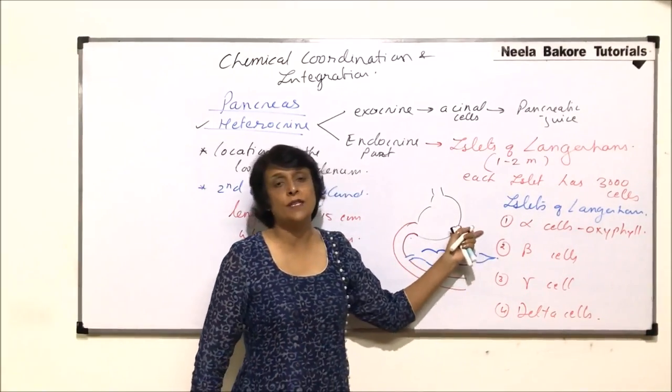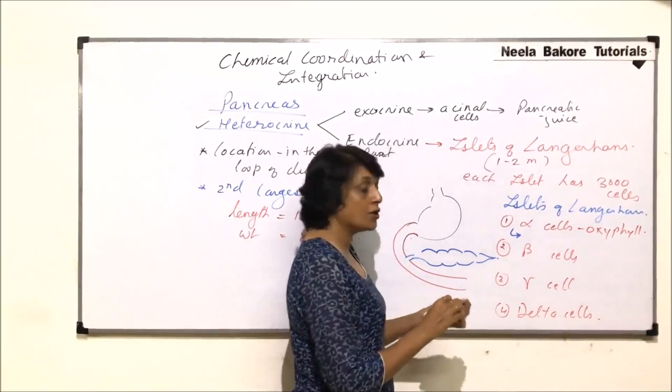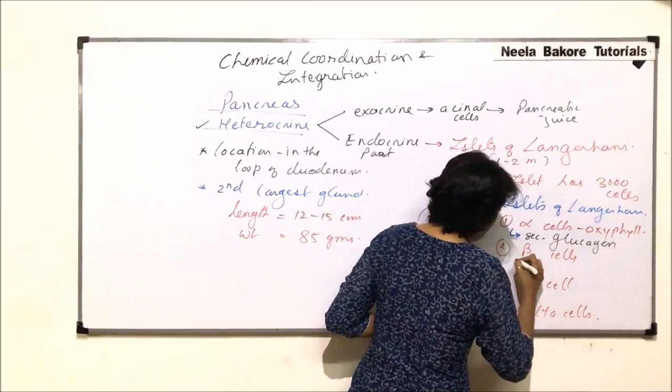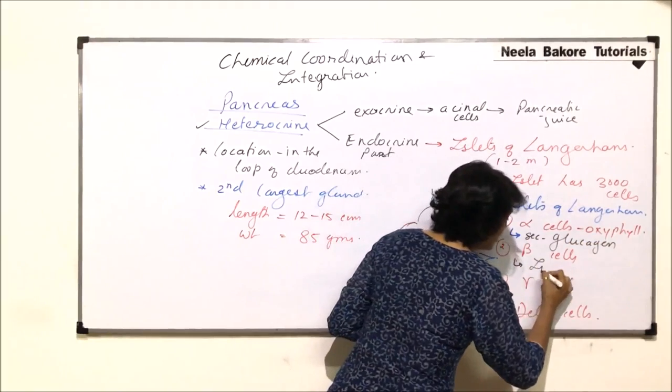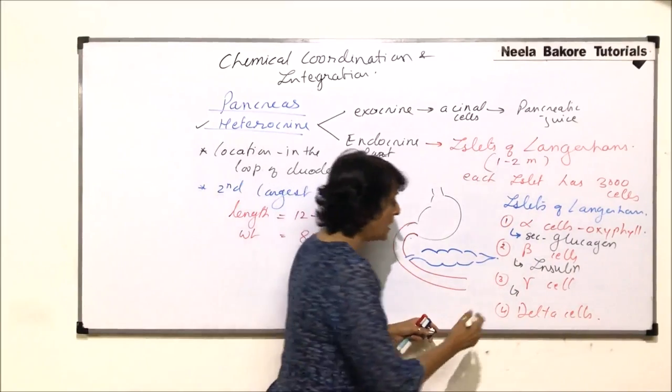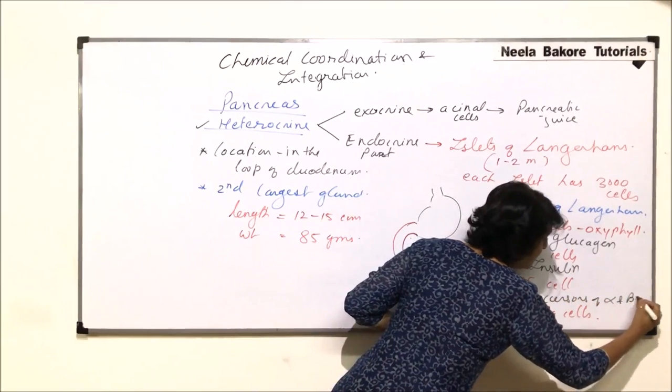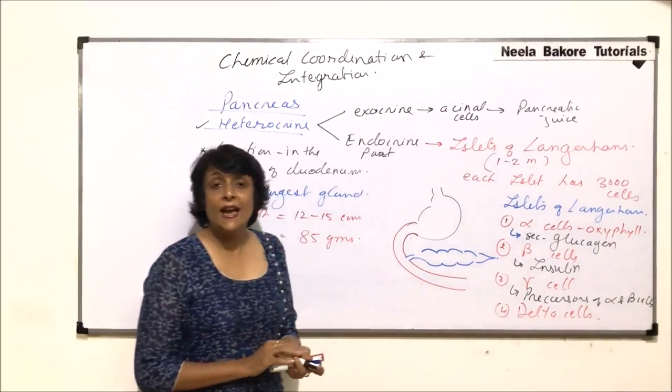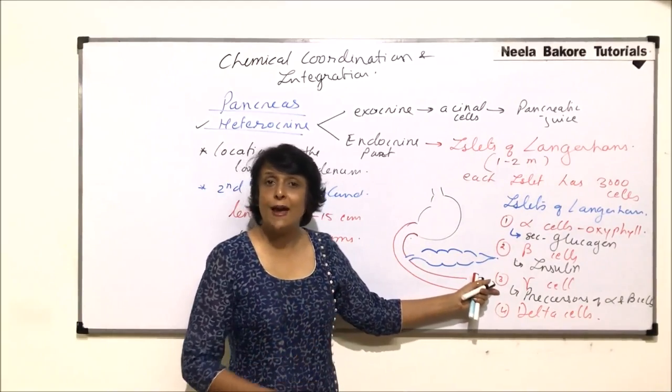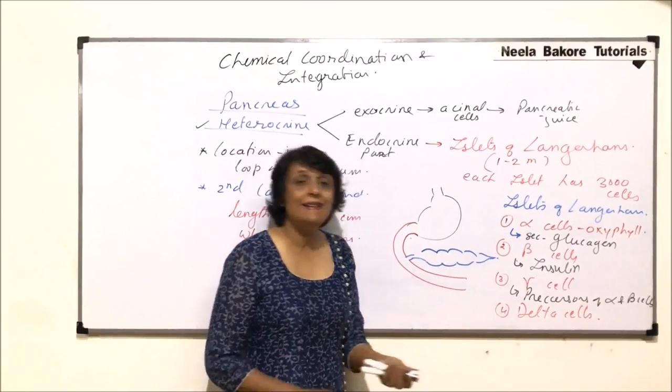Alpha cells produce a hormone called glucagon. Beta cells secrete insulin. Gamma cells are the precursors of alpha and beta cells. That means they are going to produce the new alpha and beta cells or replace the old alpha and beta cells. So from here these first two cells will originate.